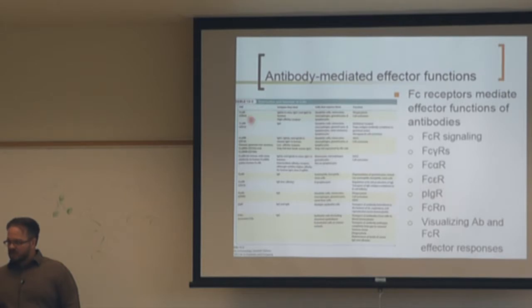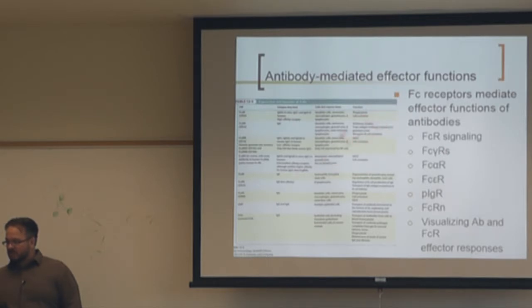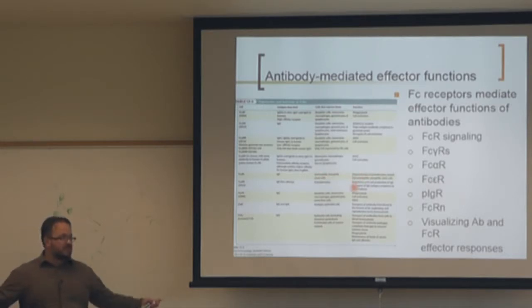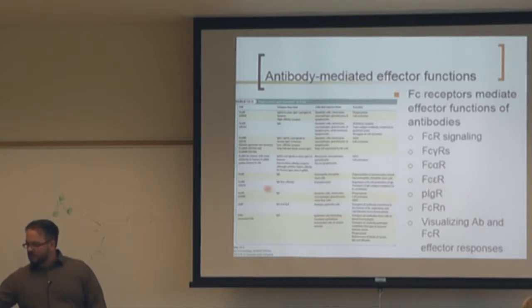FC gamma receptor 1 induces phagocytosis; FC gamma receptor 2 is inhibitory and expressed on B cells; FC gamma receptor 3 is found on NK cells and induces cytotoxicity rather than phagocytosis. FC epsilon receptor 1 is involved in degranulation — found on eosinophils, basophils, and mast cells — inducing secretion and creating an inflammatory environment.